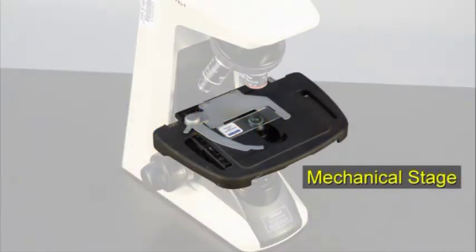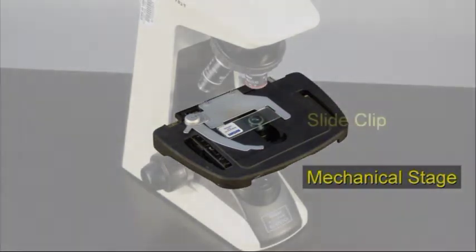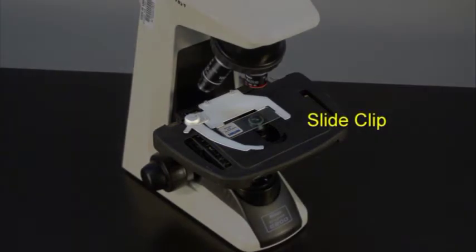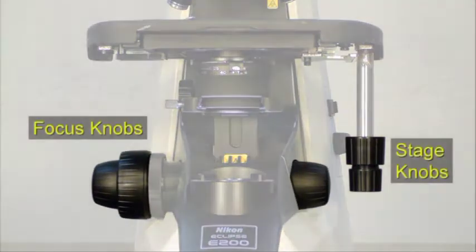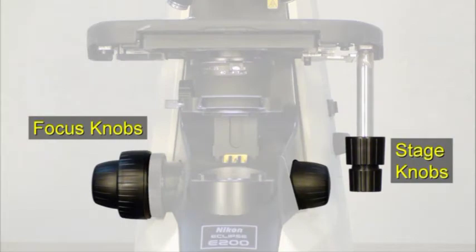The mechanical stage supports the slide and positions it so you can view different parts of the specimen. The slide clip secures the slide to the stage. The mechanical stage has four adjustments, two stage knobs and two focus knobs.